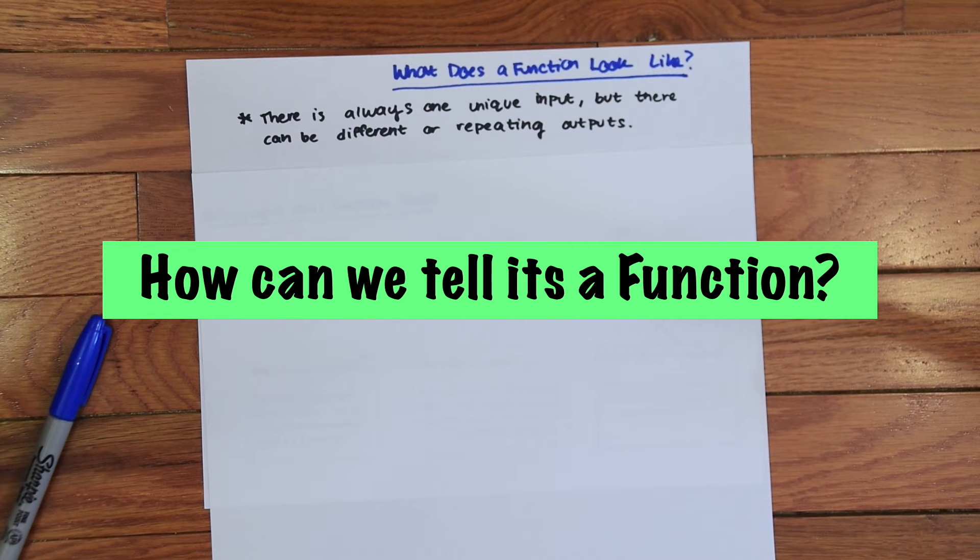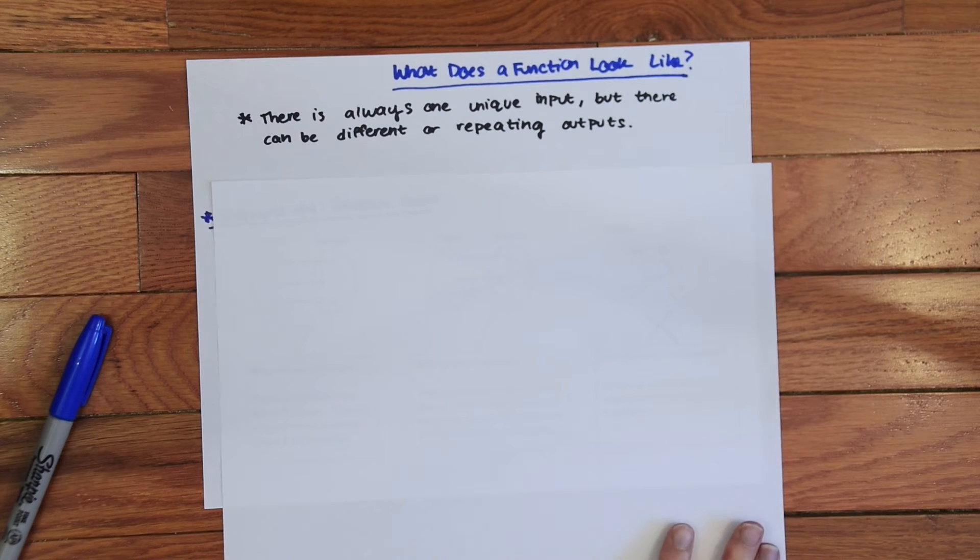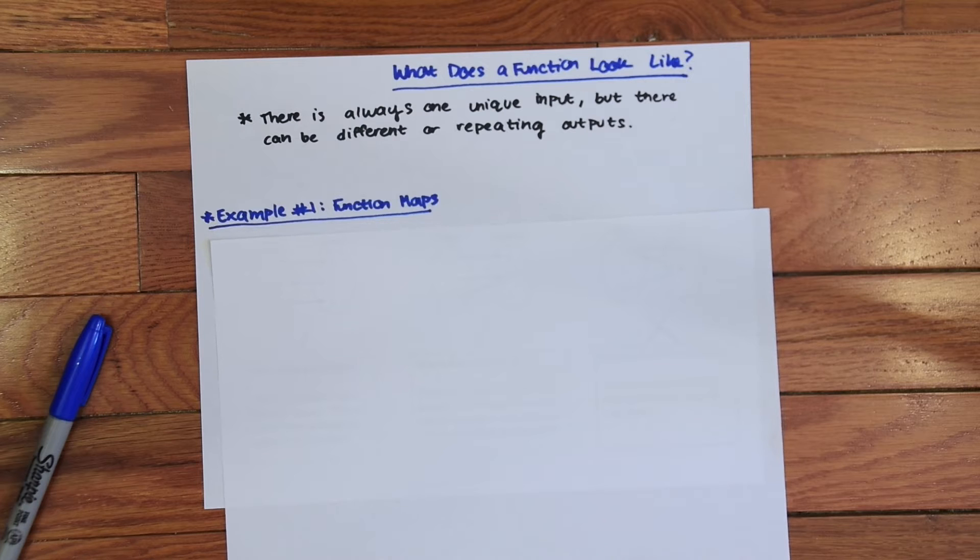So how can we tell something is a function? What does a function even look like? So a big important rule about functions is that there's always one unique input for every output, but there can be different or repeating outputs. So what does that mean? We're going to take a look at a bunch of different examples and the first type of examples are called function maps.